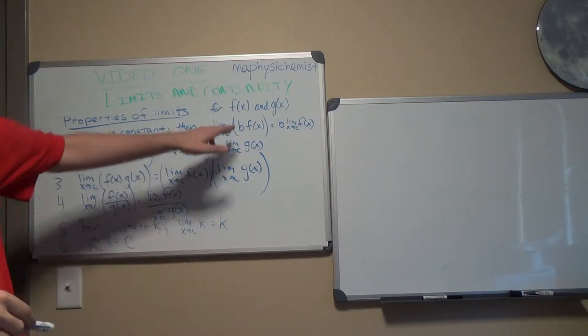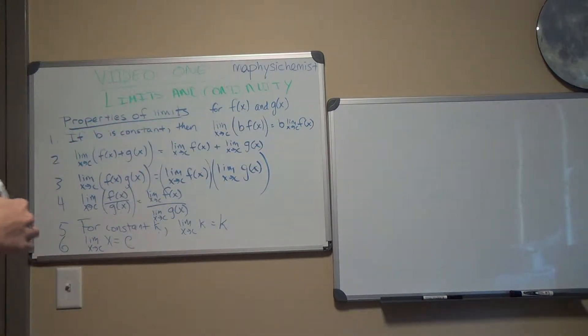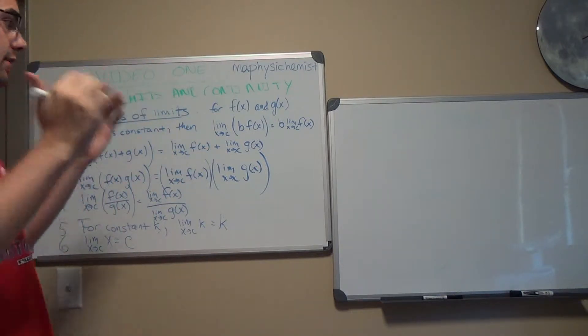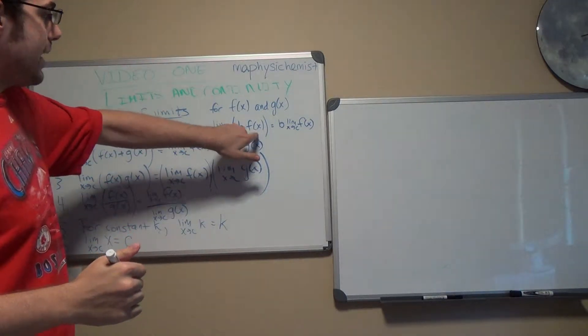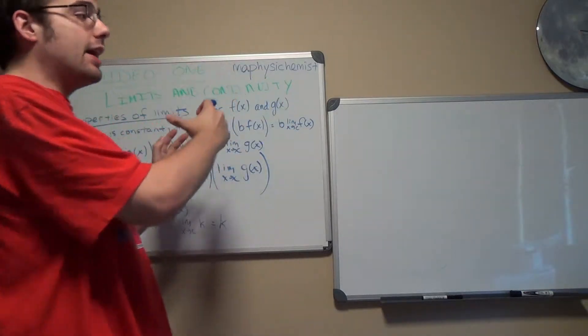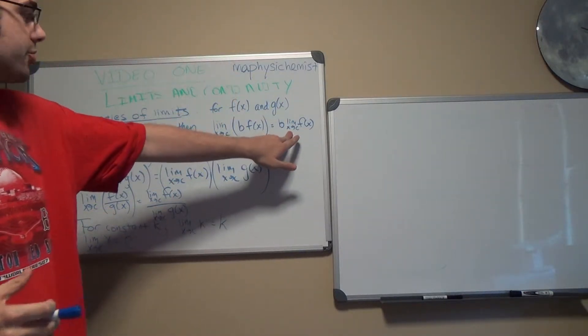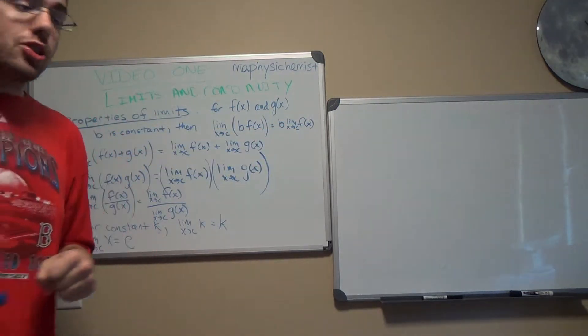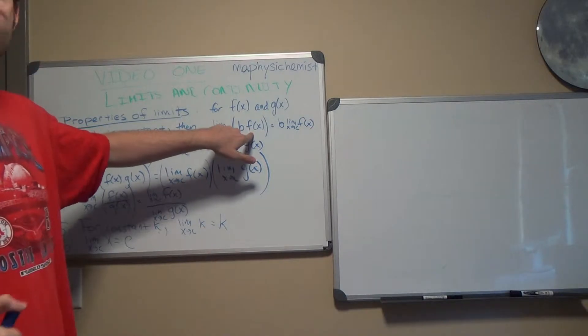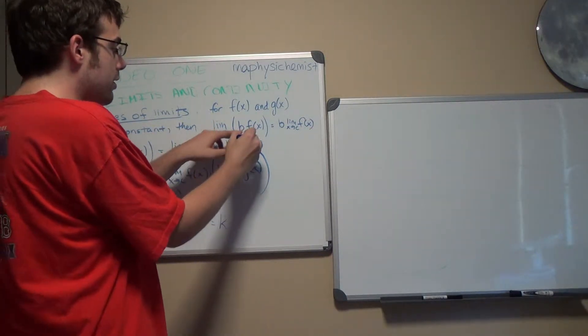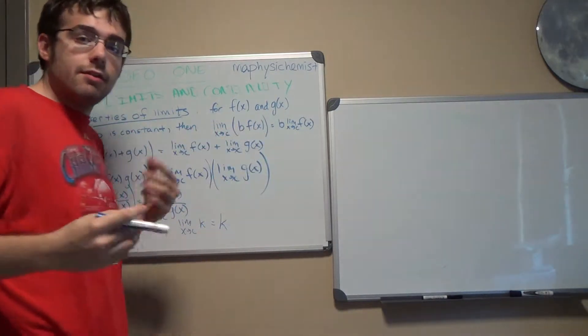So for two functions f of x and g of x, if b is constant, then you can take a function b times f of x. You can take the constant b outside of the limit, which you can see right here, and multiply b times the limit of the function as opposed to the left-hand side of the equation. You're taking the limit of b times the function f.